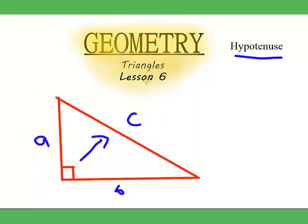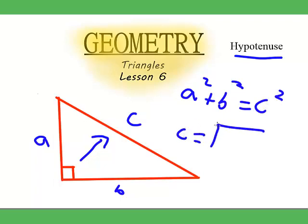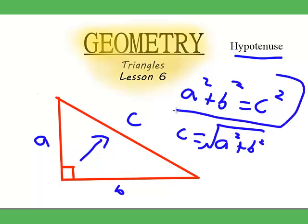So, the Pythagoras' Theorem states that A squared plus B squared is equal to C squared. And this also means that C is equal to the square root of A squared plus B squared. But this is the main form we'll be using for now.